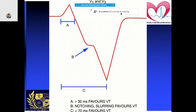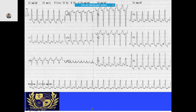You should try to see different deflections on the ECG, putting them in parts A, B, C. If the first part from Q to the first deflection is more than 30 milliseconds, it tends to favor VT. Similarly, if there is notching in the S wave, it favors VT. And if the whole QRS to the nadir of the S wave is more than 70 milliseconds, that also indicates VT.